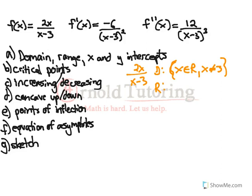Range, there is an x on top, so there's no value that y cannot take on, so this is just y is an element of the reals. For our intercepts, let's do our y-intercept first. So our y-intercept is really easy to find. You just plug in 0 for x, so it's 2 times 0 over 0 minus 3, which is 0 over negative 3, which is 0.